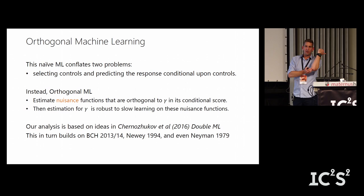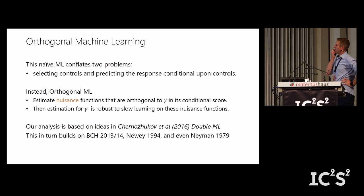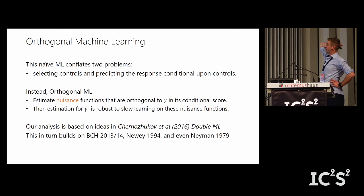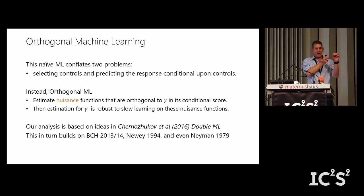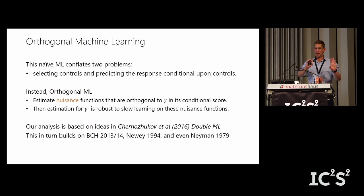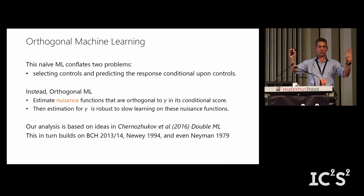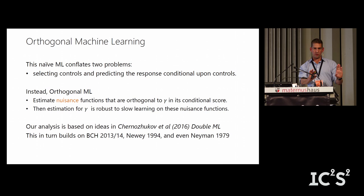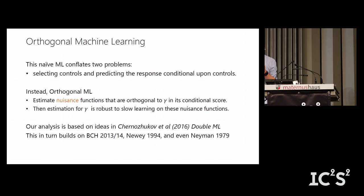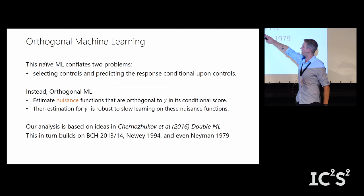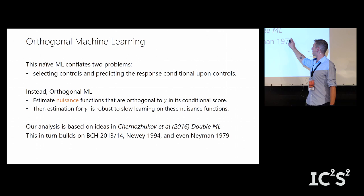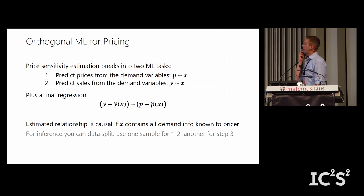There's a well-established literature on how to fix this. What you actually do is estimate nuisance functions that are orthogonal to the treatment effect. You have a function where prices depend on those covariates, and a function where sales depend on prices and those controls. You treat the dependence of prices on the words as a nuisance function, estimate it first, take the residuals of the prices, and then use those residuals to predict the response. This is based on ideas in the Chernozhukov et al. paper but goes back to Robinson in the 1970s.